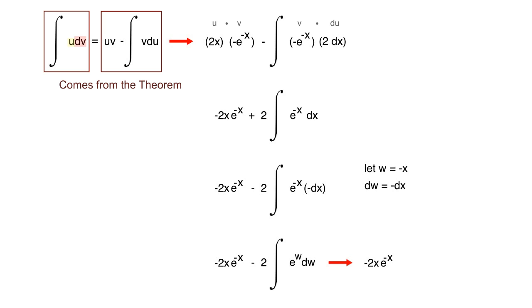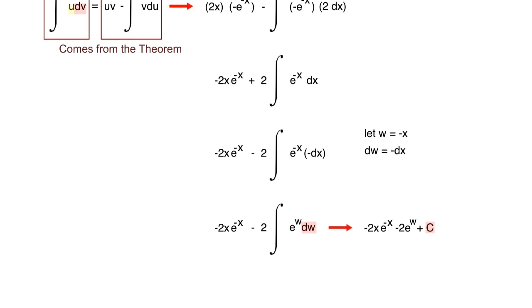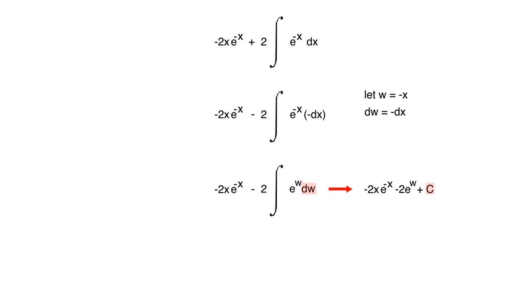This will give you negative 2x e to the negative x minus 2 times e to the w plus our arbitrary constant of integration C. The final step in this process is just to take our w and resubstitute the value that we assigned it to begin with, in this case negative x.